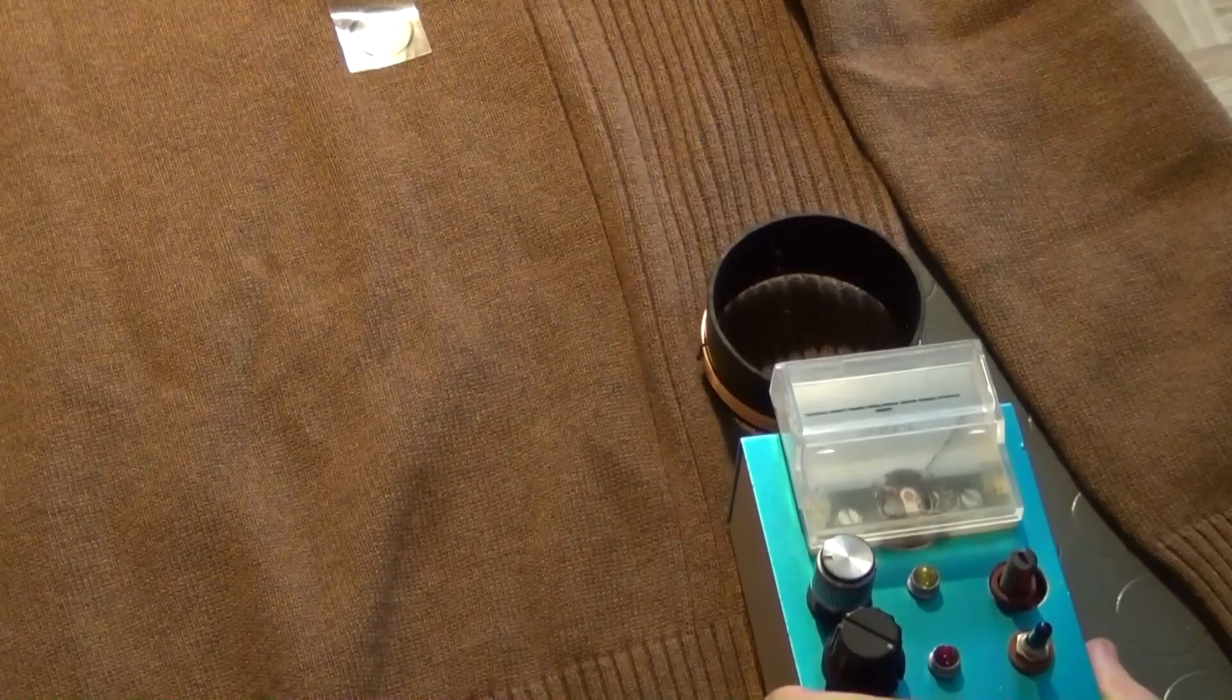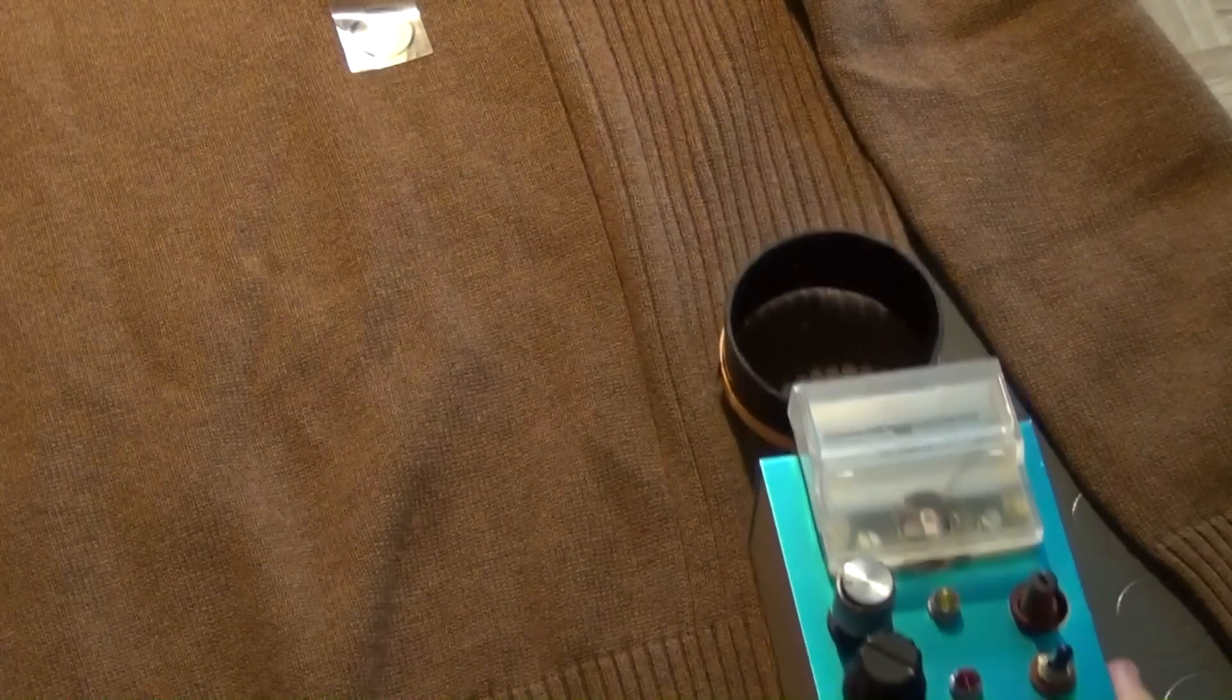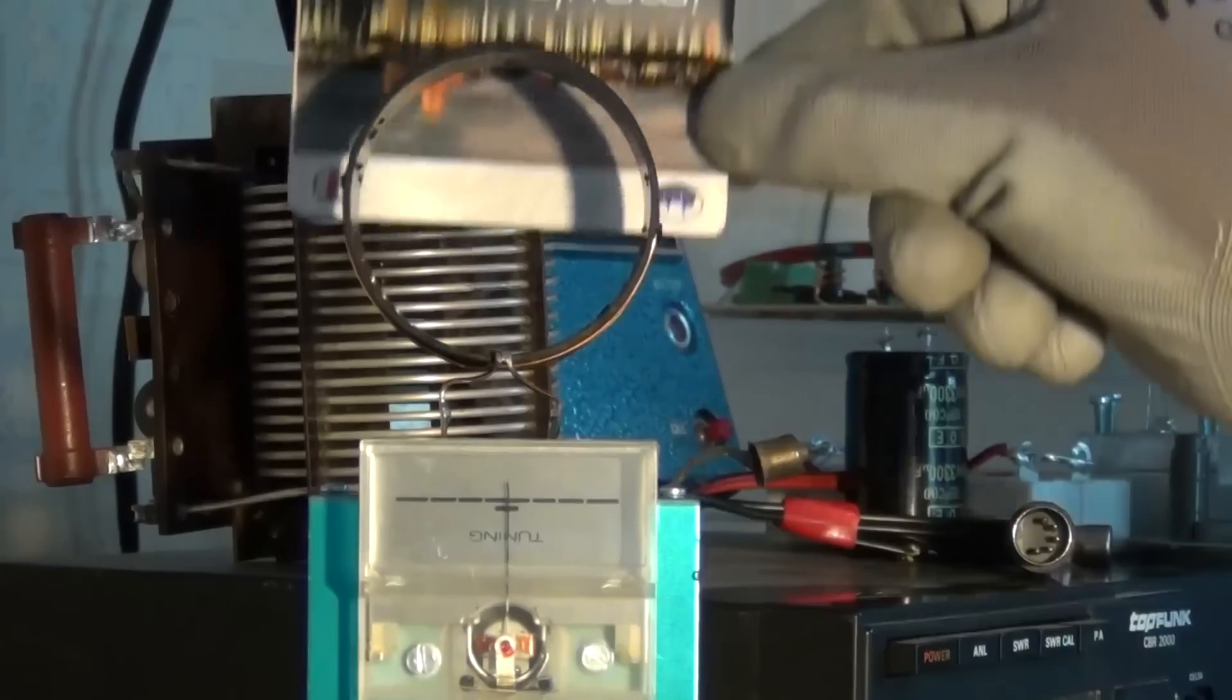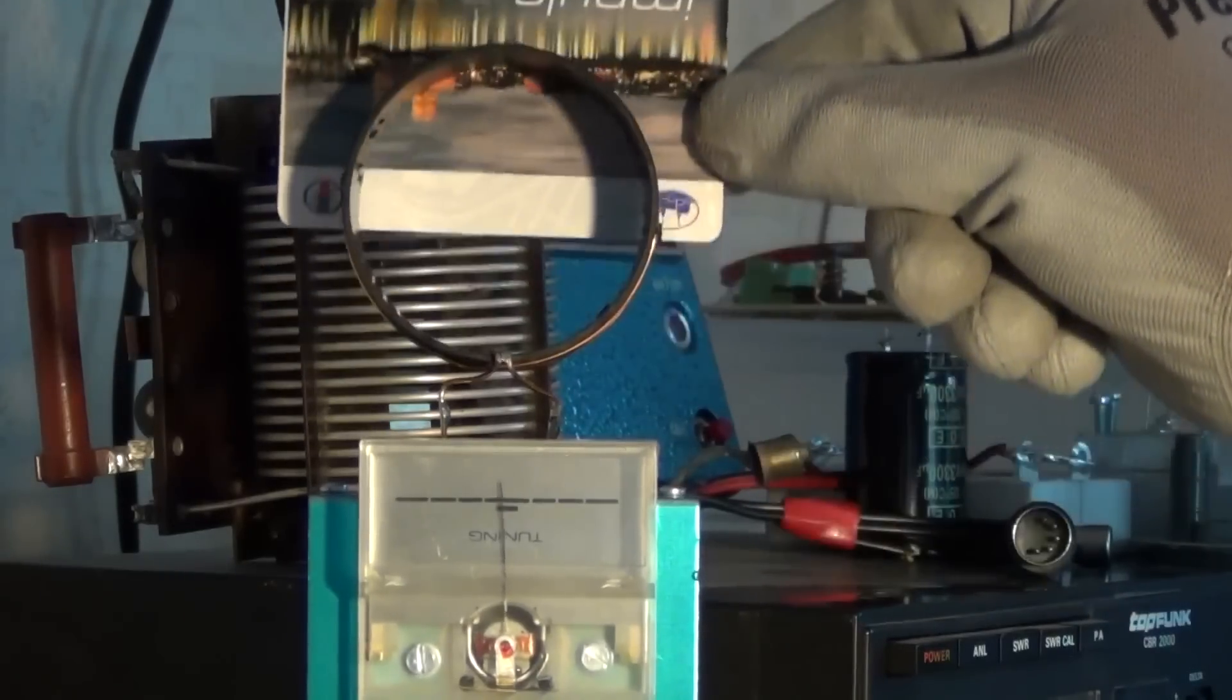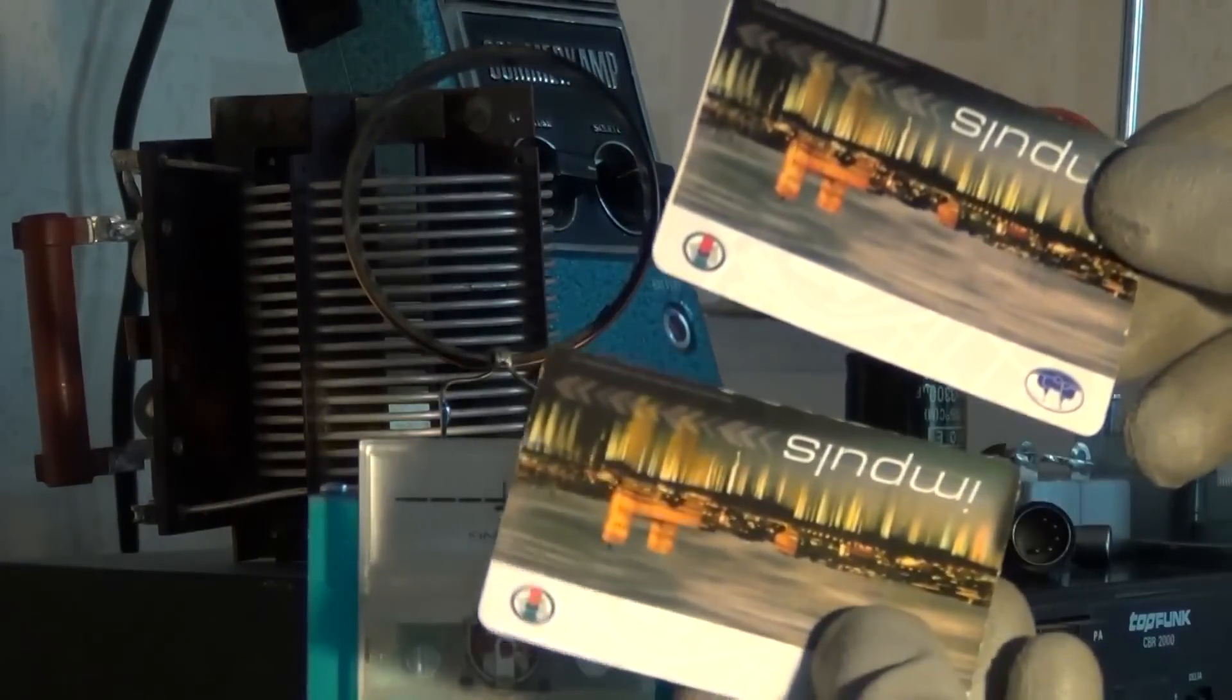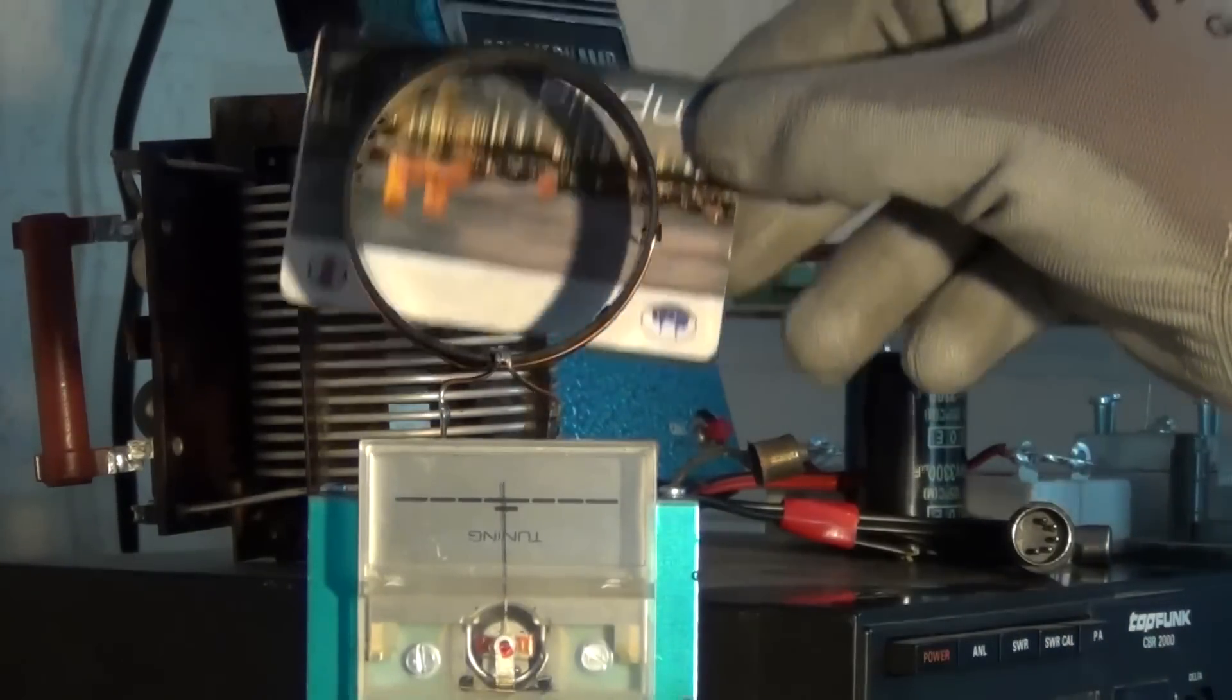It can now be used to search for hidden RFID tags in all kinds of items, such as your clothes or credit cards. It also can be used to indicate if RFID tags are still working which you try to disable by using an RFID zapper or other means of destruction.